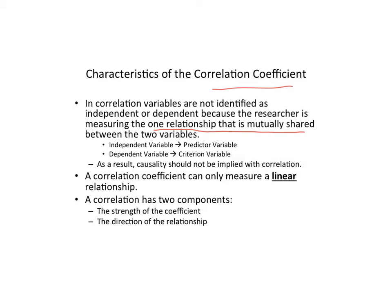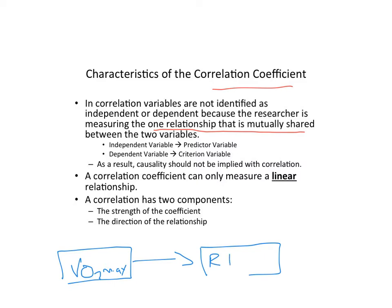So if we want to think about predictor and criterion, we could ask: does my fitness level, as represented by VO2 max shown on the previous slide, predict my resting heart rate? That would be the correlation we'd expect. Our predictor would be fitness, operationally defined as VO2 max, and our criterion would be resting heart rate.